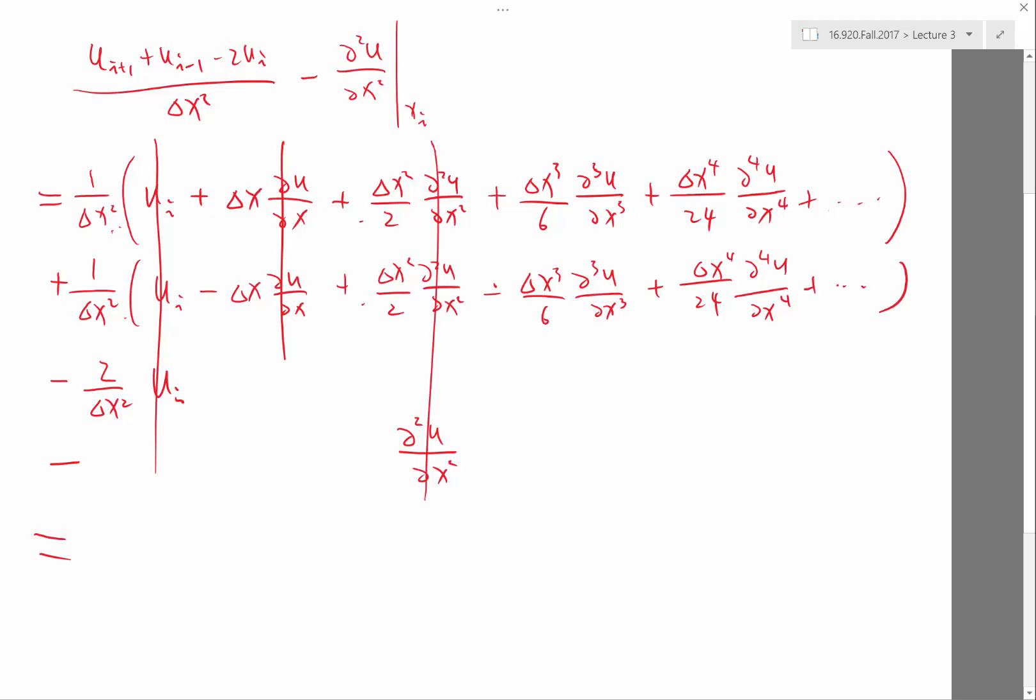Supposed to be, right? Okay. This cancels. 1 plus, 1 minus. Everything cancels. No. This doesn't cancel, right? The first term that doesn't cancel is the leading term in the error of the finite difference approximation.